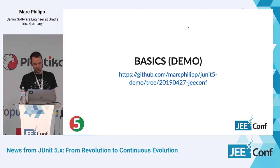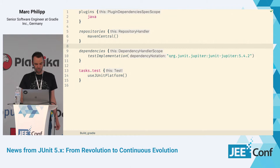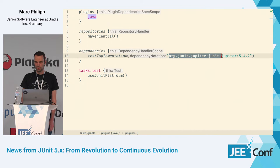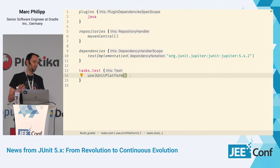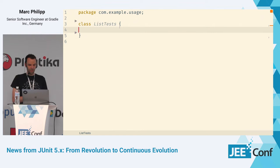Without much further ado, I'll jump into a coding demo. This is a small local Gradle project. I'm just going to show the dependencies here — it's a very basic one that uses the Java plugin and pulls in the Jupiter dependency. It also configures the Gradle test task to use the JUnit platform. Once we've done that, we can write our first test.